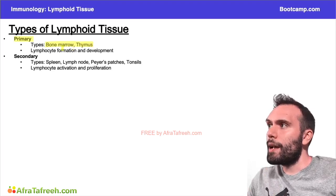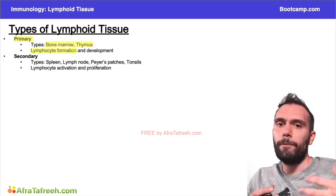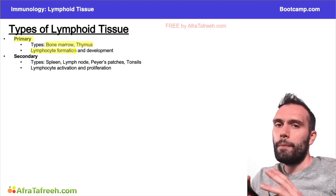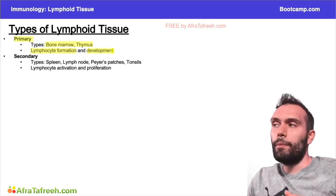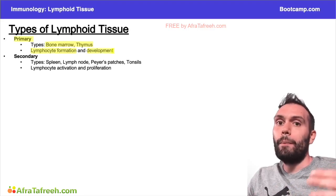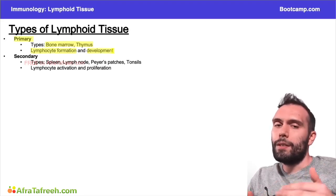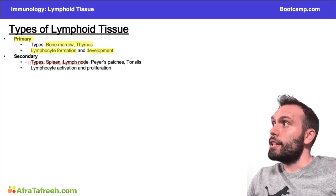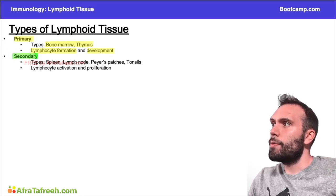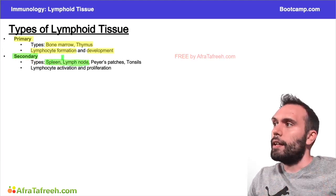The thing to remember about the primary lymphoid tissue is that this is where your lymphocytes are usually going to form, particularly in the bone marrow. We're also going to have lymphocyte development — think B for bone marrow, B for B cells. The secondary forms of lymphoid tissue are going to be the spleen and the lymph node, which we'll talk about in the upcoming video.